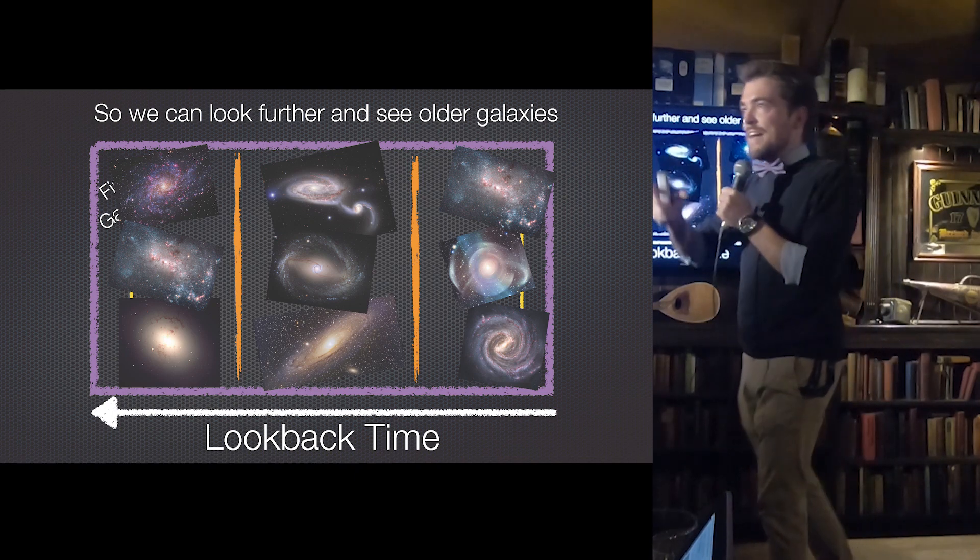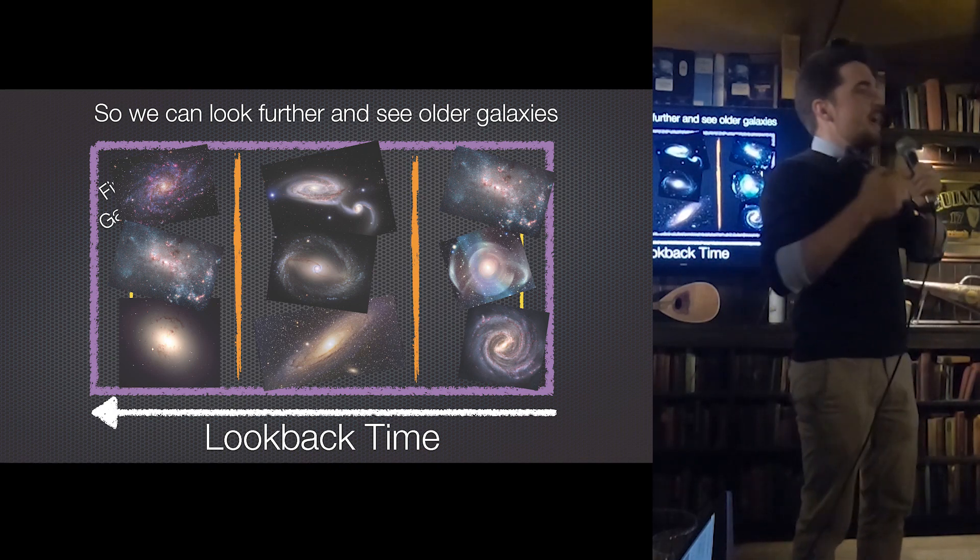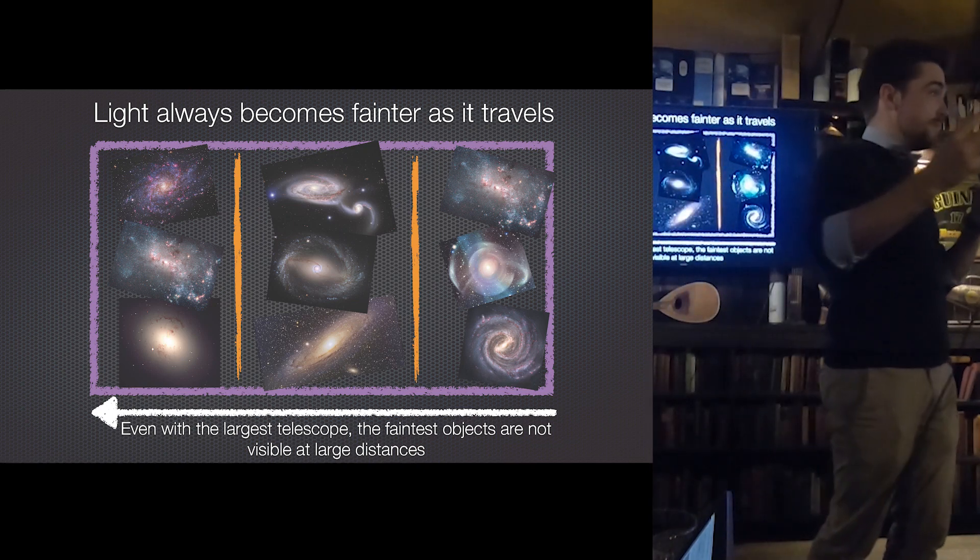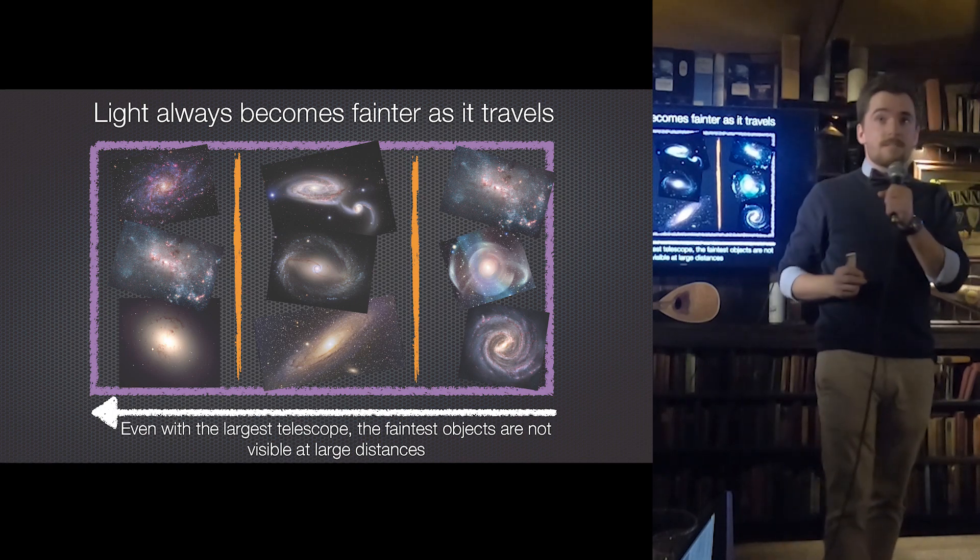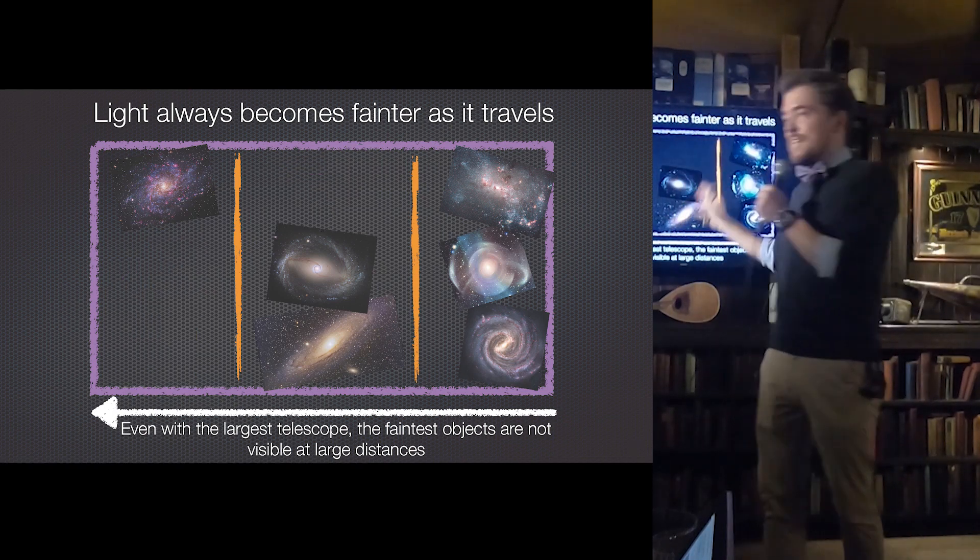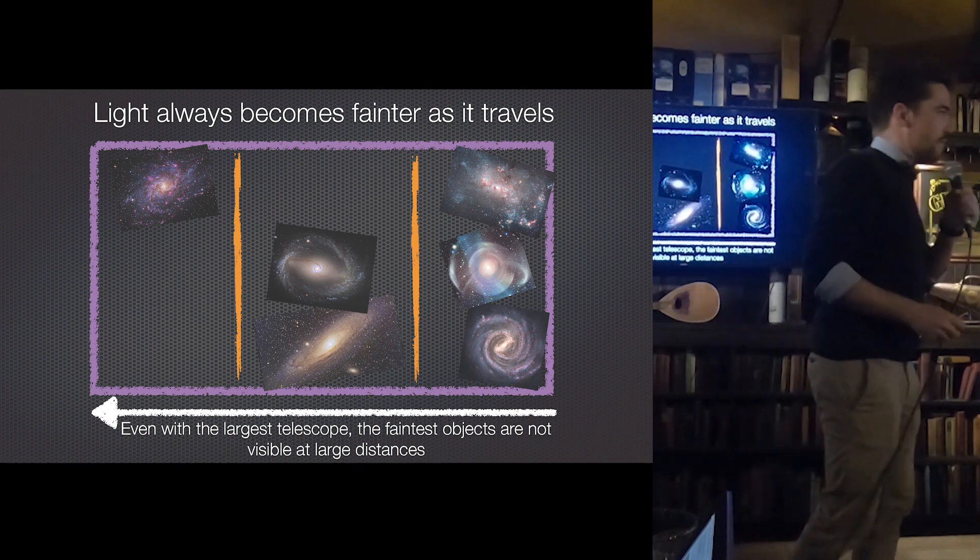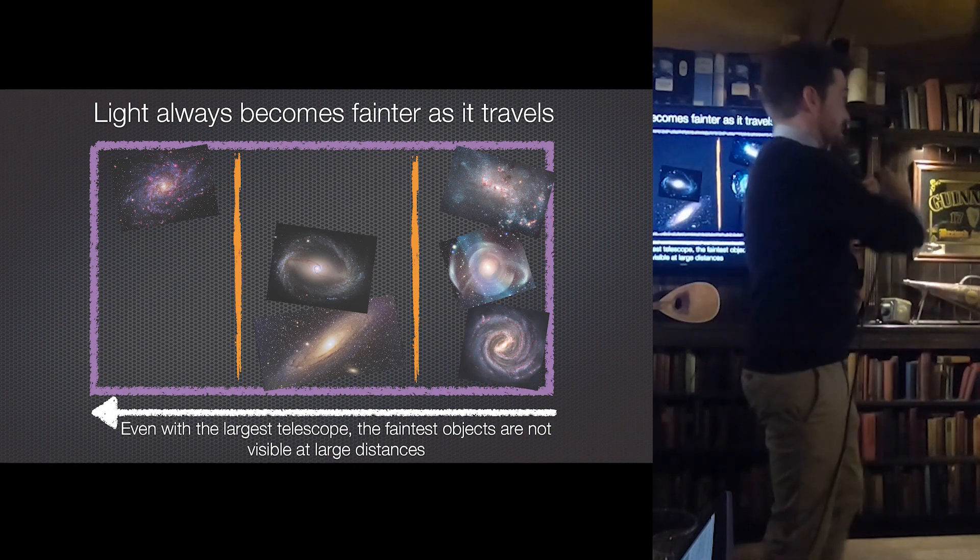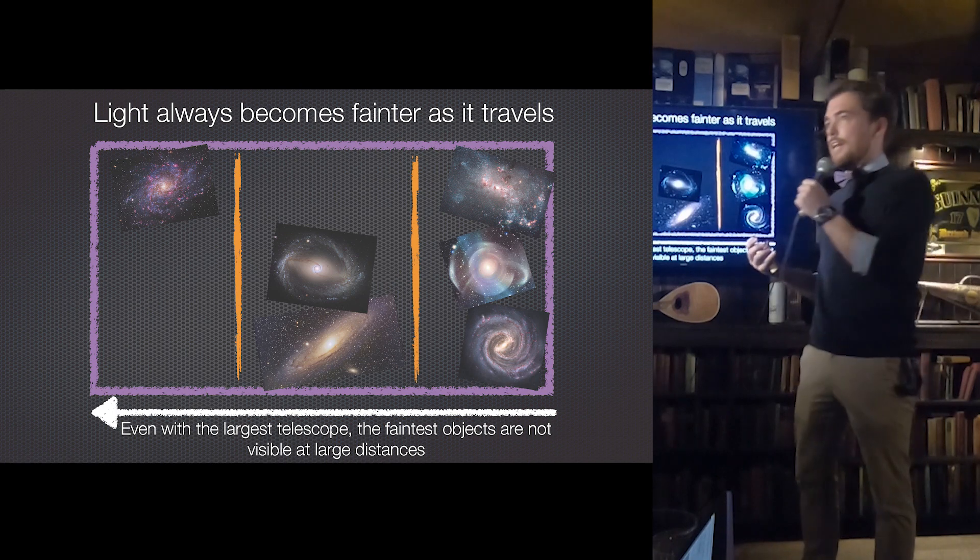And so we can actually do this task. We can actually look at galaxies as they were when they were young, when they were middling aged and now. Except kind of we can't. And the reason that we can't is because as light travels through the universe it disperses. It gets fainter. Which means that when we look at galaxies at the edge of the universe we don't see them all. We only see the very brightest ones. So we don't see that picture. We see an incomplete picture. We see all of the galaxies in the nearby universe because they're very close and very easy to see.